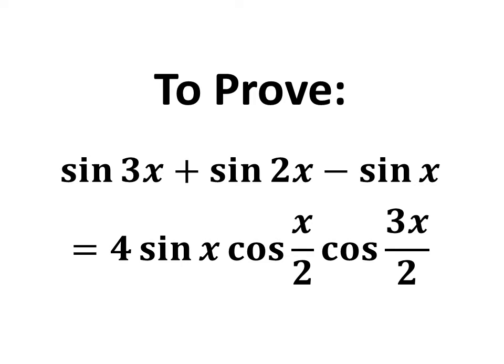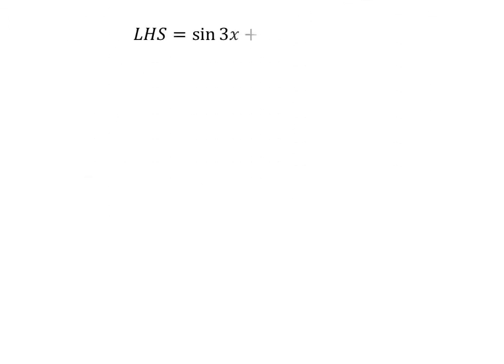In this video, we will learn to prove the equation: sine of 3x plus sine of 2x minus sine of x is equal to 4 times sine of x times cosine of x/2 times cosine of 3x/2. The left-hand side of the equation to be proved is sine of 3x plus sine of 2x minus sine of x.